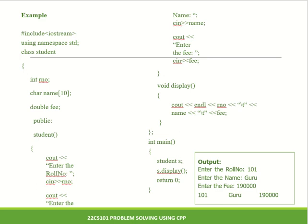The class name is student, so the constructor name is also student. There is no return type because it is not going to return anything. Within the constructor, you have the code: cout — enter the roll number, cin rno; cout — enter the name, cin name; cout — enter the fee, cin fee. So we are prompting the user and receiving values for the register number, name, and fee.